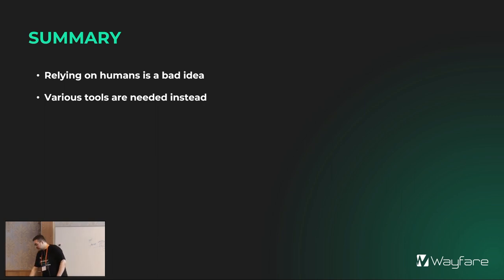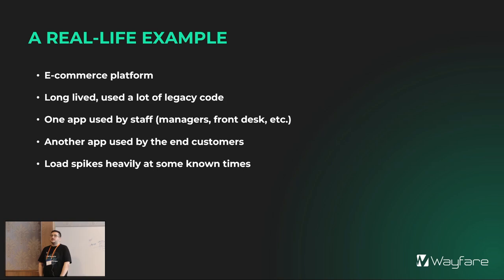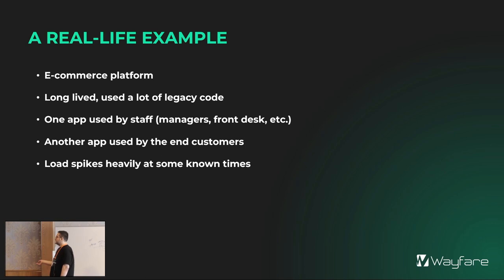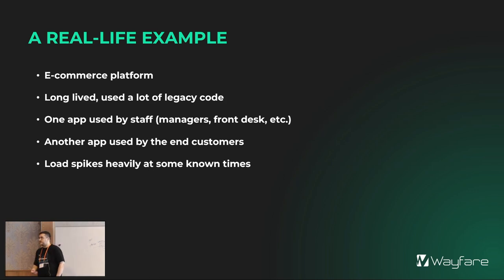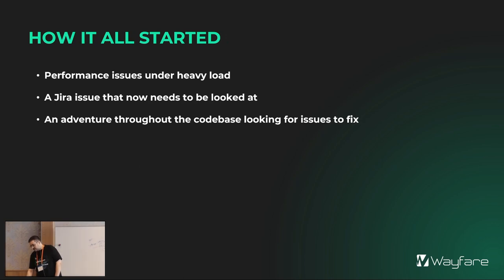The real-life example is an e-commerce platform split into two pieces: one for staff — managers, front desk users — which hasn't really been an issue so far. The other part is used heavily by customers: you want to buy something, you go to the website, you search for it, you start buying it — and that's where you run into performance issues. One key factor is that load spikes heavily at known times — events where essentially every single user tries to buy the same item as everyone else.